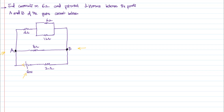From the positive plate of the battery, a current I starts. After coming to a junction, this current splits — it becomes I1 and I2. This I2 will go through the 4 ohm resistor. After coming to the next junction, I2 gets distributed further into I3 and I4, then I3 and I4 recombine as I2. That I2 and I1 then combine back as I and go back to the battery.